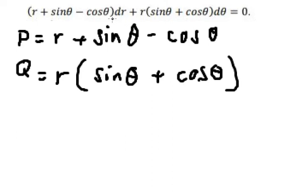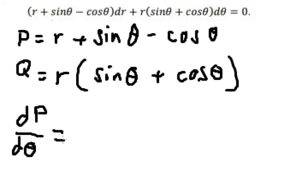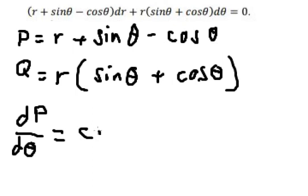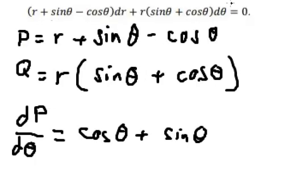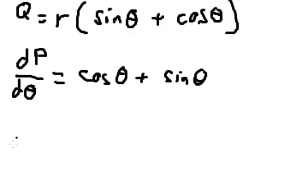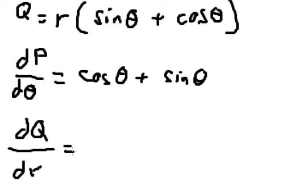We need to find the first derivative of P with respect to θ. Doing that derivative gives us cos(θ) plus sin(θ). Next, we find the first derivative of Q with respect to R.